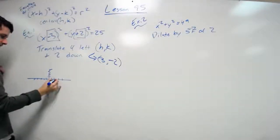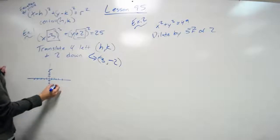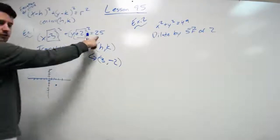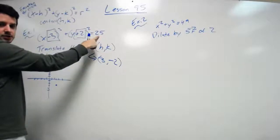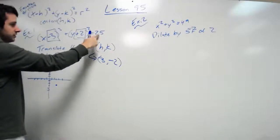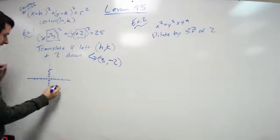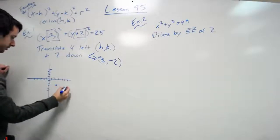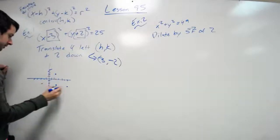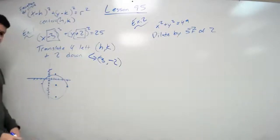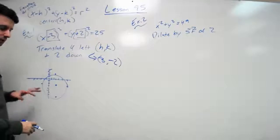So I'm going to graph here, three negative two. It has a radius of, if it's 25 and it doesn't say squared, then that means it's the square root of this. So the square root of 25 is five. So I go five units to the right, five units down, five units up, five units to the left. So roughly my circle is right there.